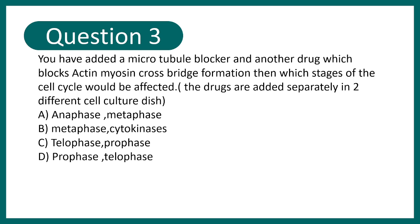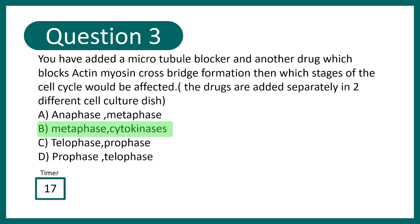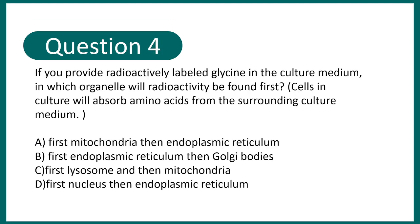Question 3: You have added a microtubule blocker and a drug which blocks actin-myosin cross-bridge formation. Which stages of the cell cycle would be affected? Options: anaphase & metaphase, metaphase & cytokinesis, telophase & prophase, prophase & telophase. The correct answer is B — metaphase and cytokinesis — because microtubules are involved in metaphase/anaphase, and cytokinesis relies on actin-myosin interaction.